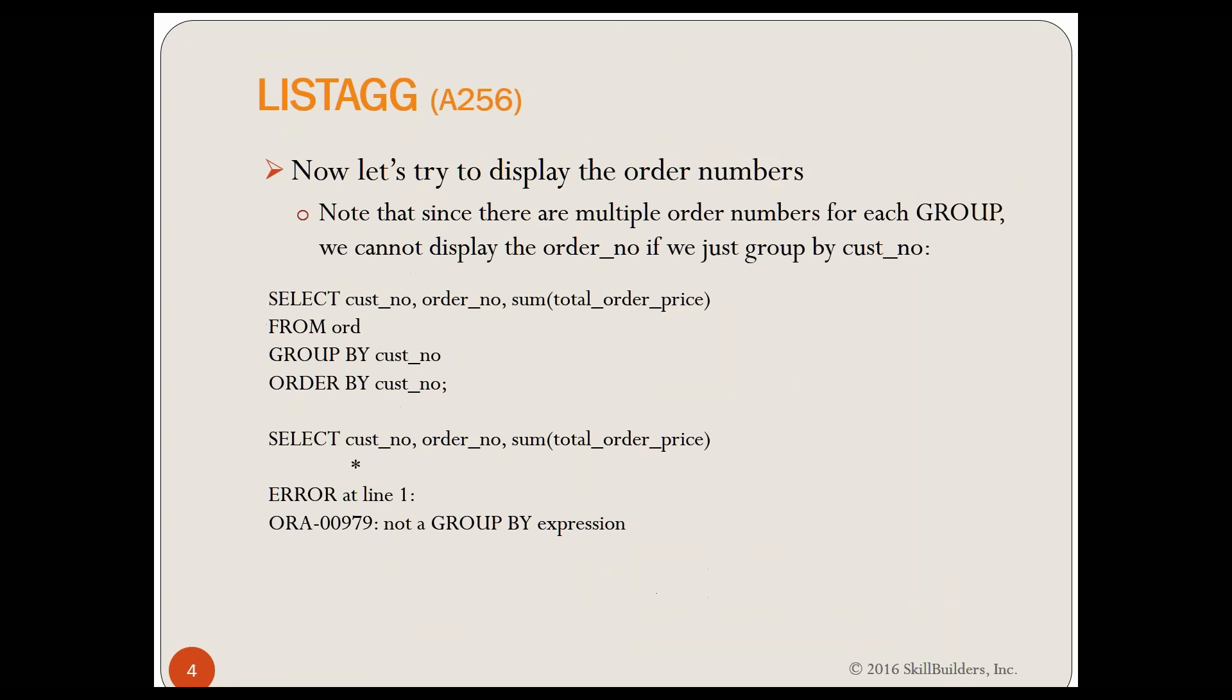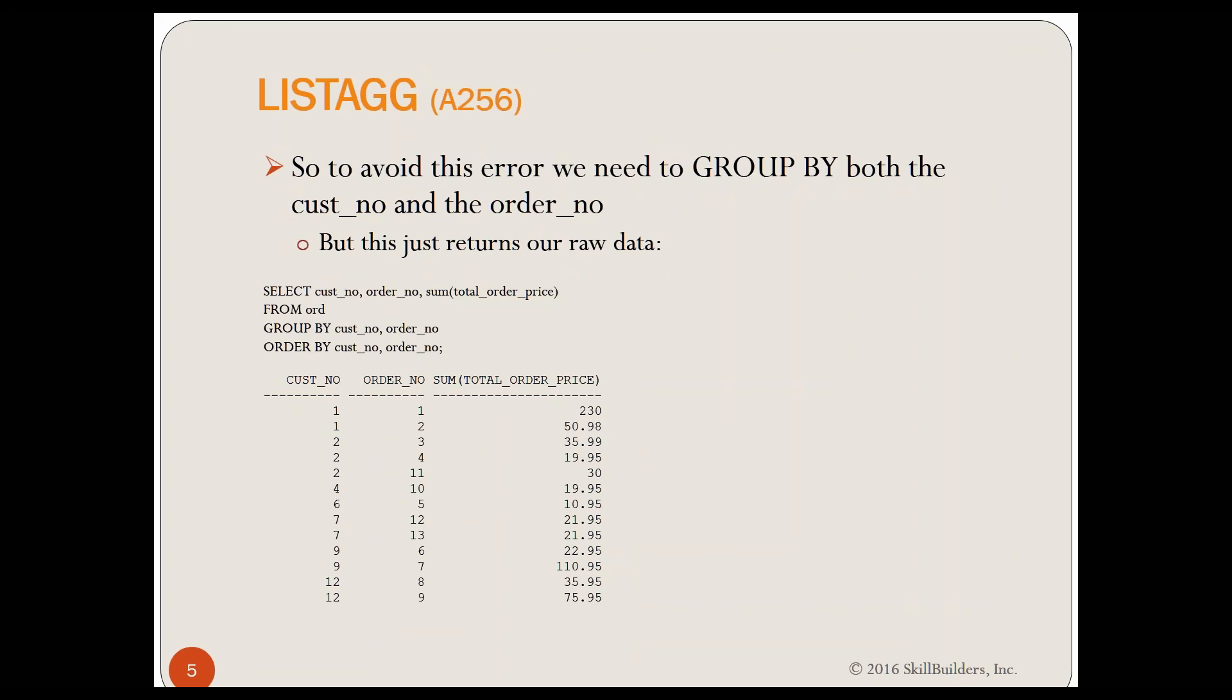Well, when I GROUP BY CUSNO and ORDERNO, I'm back to every order with one row for every order, and I have a GROUP BY, but it's not helping me.